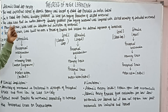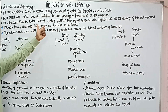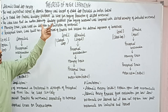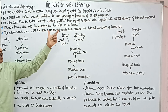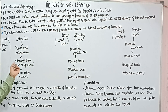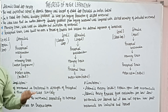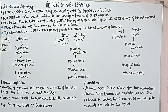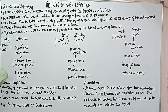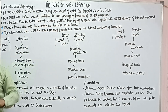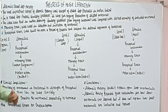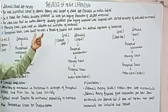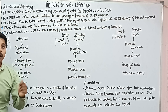The most important aspect of Adams' theory was the concept of the closed loop process. In a closed loop process, sensory feedback is used from the ongoing production of skilled movement.